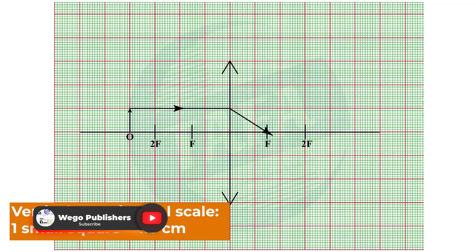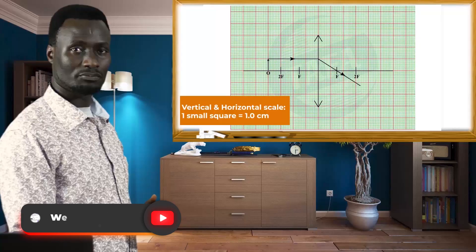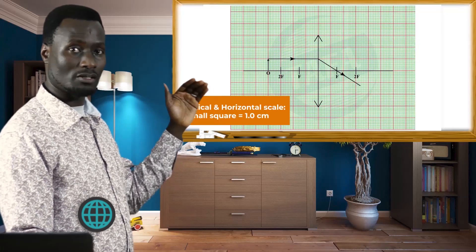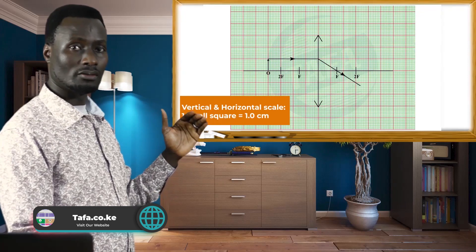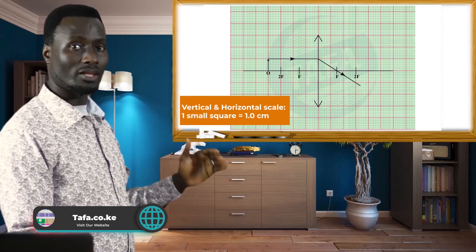This ray, as it passes through the lens, is refracted to pass through the principal focus F on the other side of the lens. Arrows must be indicated on the lines so that it qualifies the lights to become rays.